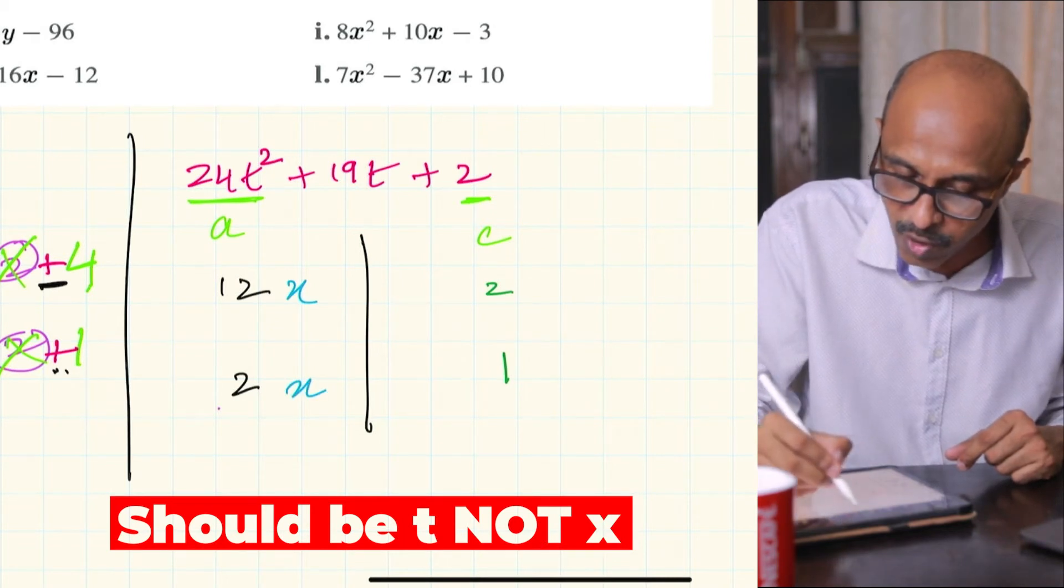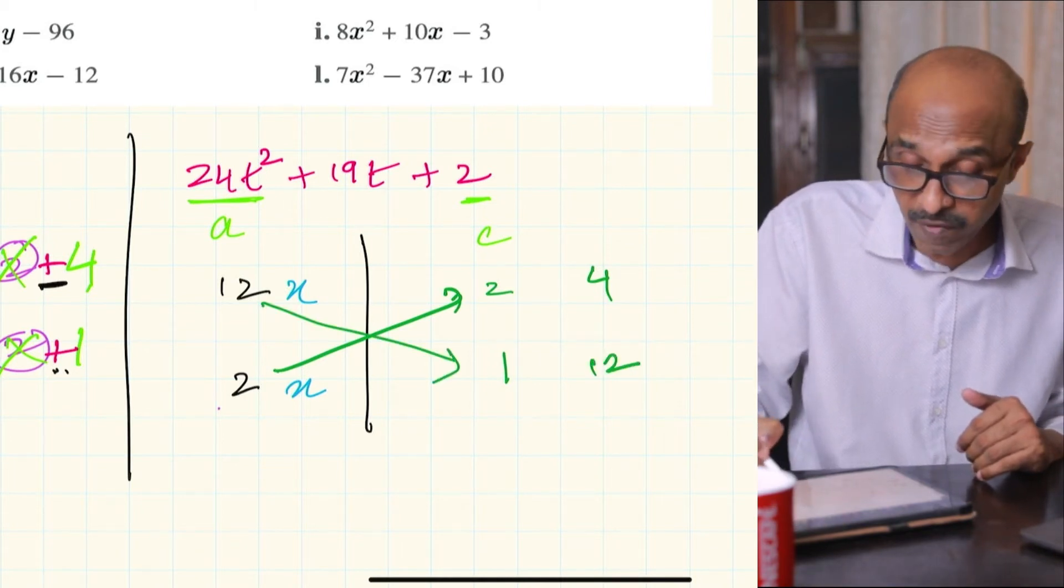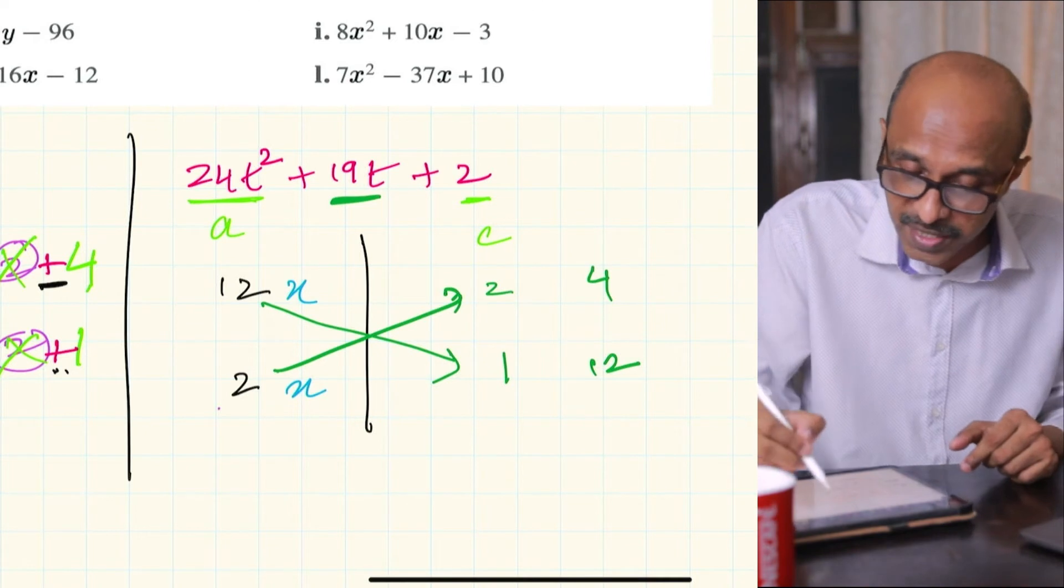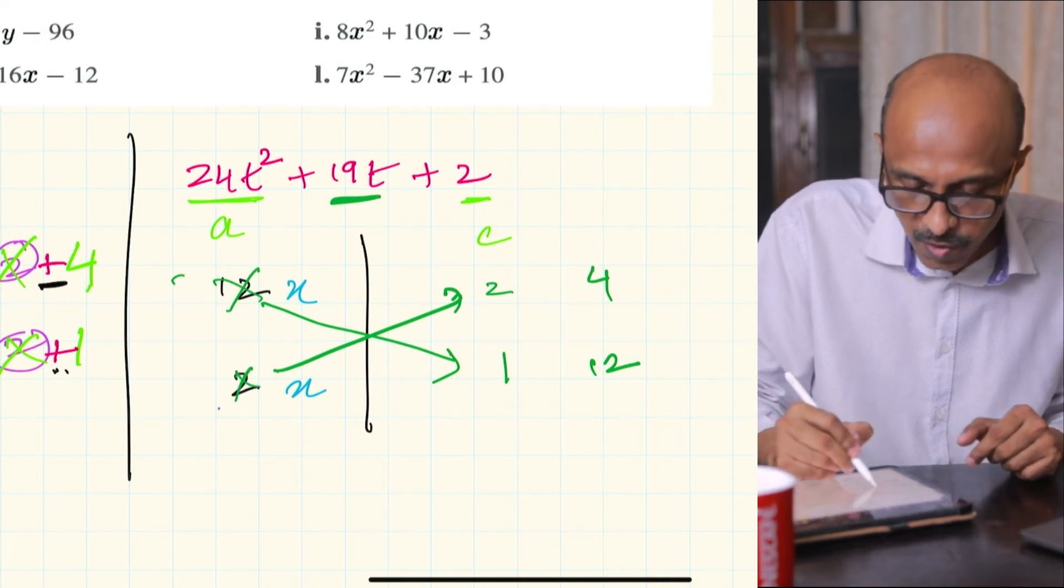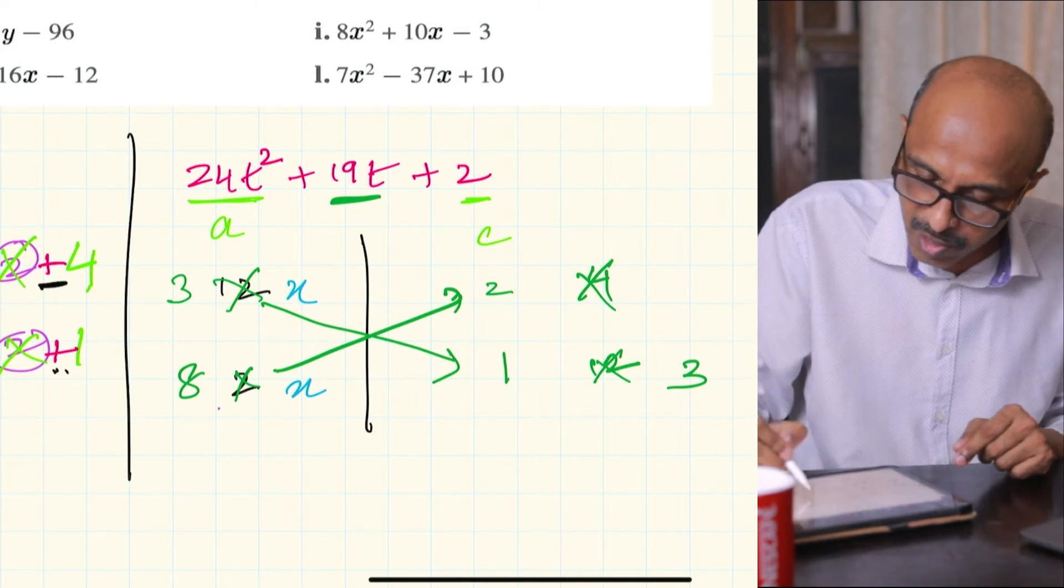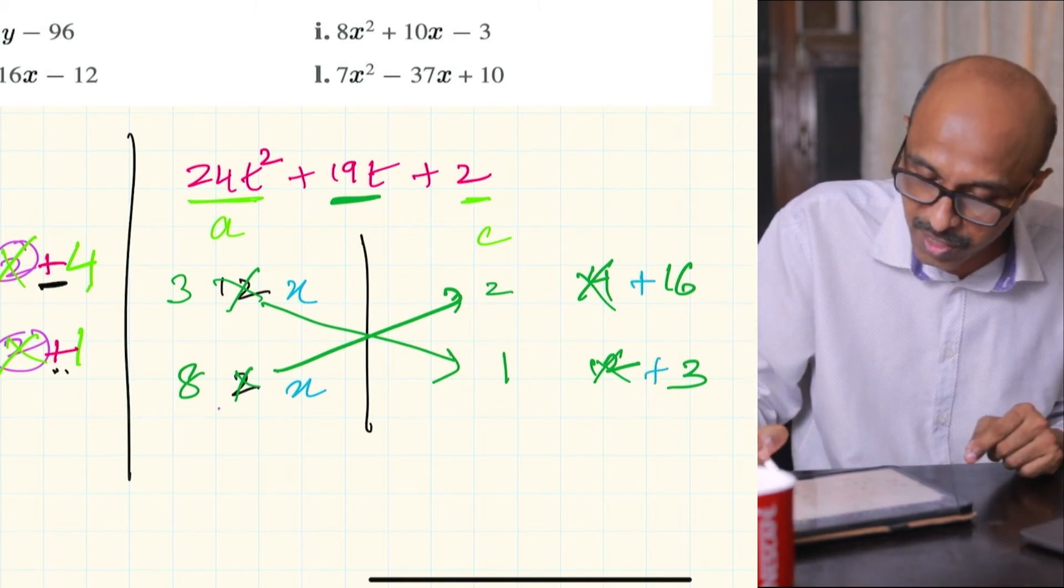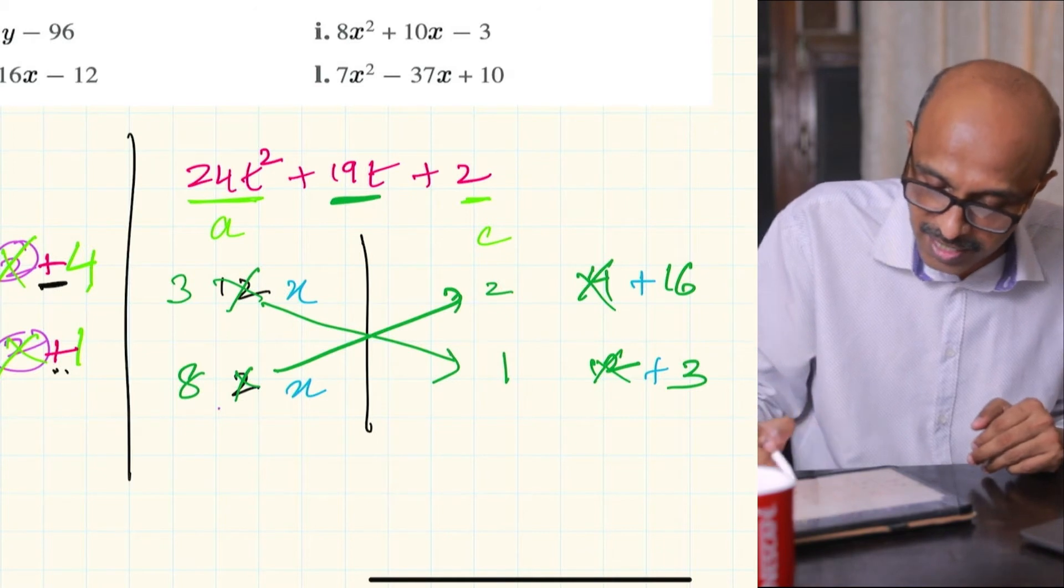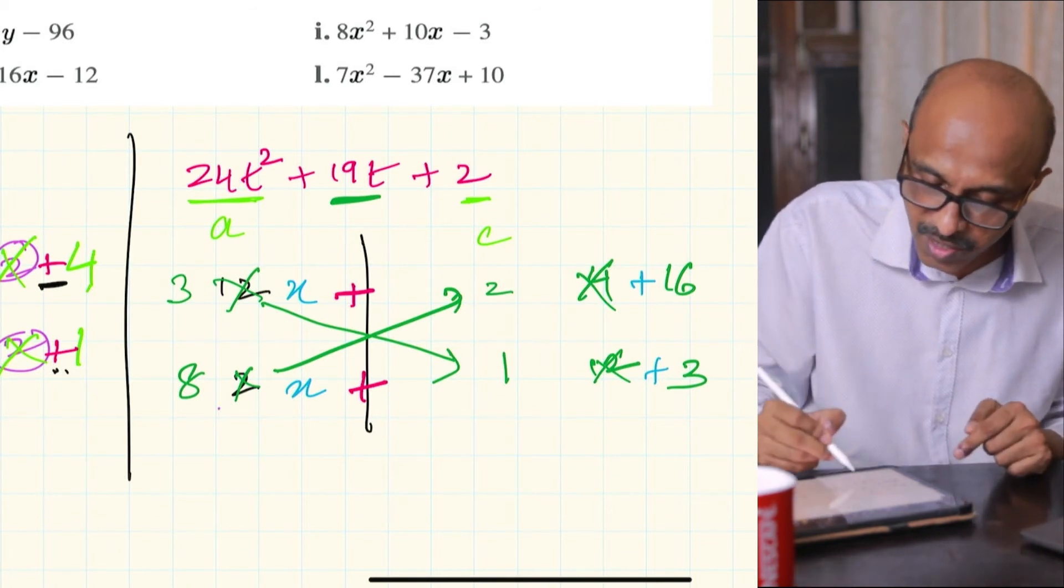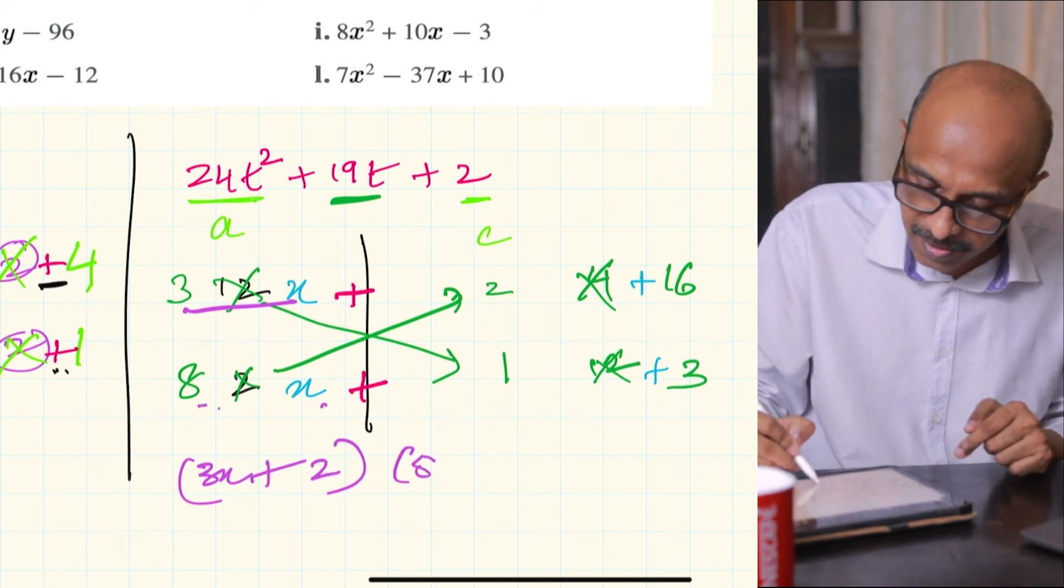We are going to cross multiply: 2 times 2 will give us 4 and 12 times 1 will give us 12, and 12 and 4 by no means will add up to 19. That means this factor is not going to work. Let's try with 3 and 8: 3 times 1 is going to be 3 and 8 times 2 is going to be 16. Can you see, 16 and 3 add up to 19. This should be plus and plus. Those same signs that you've used there, you've got to put it up here. So the factors would be 3t + 2 and 8t + 1.